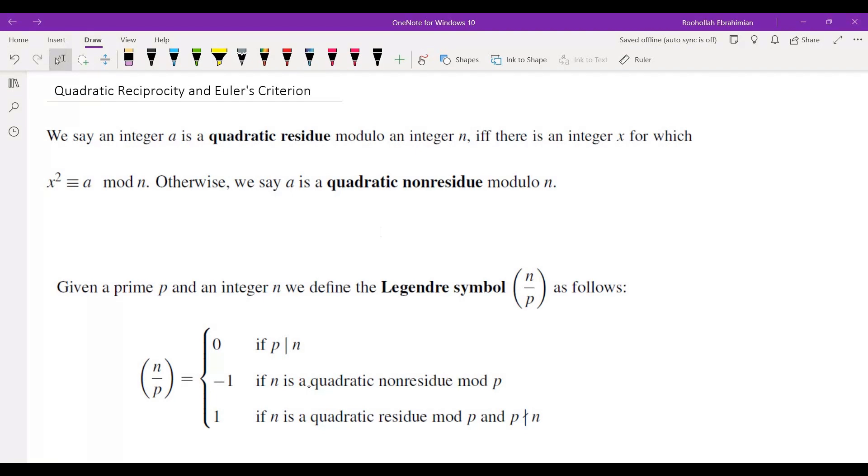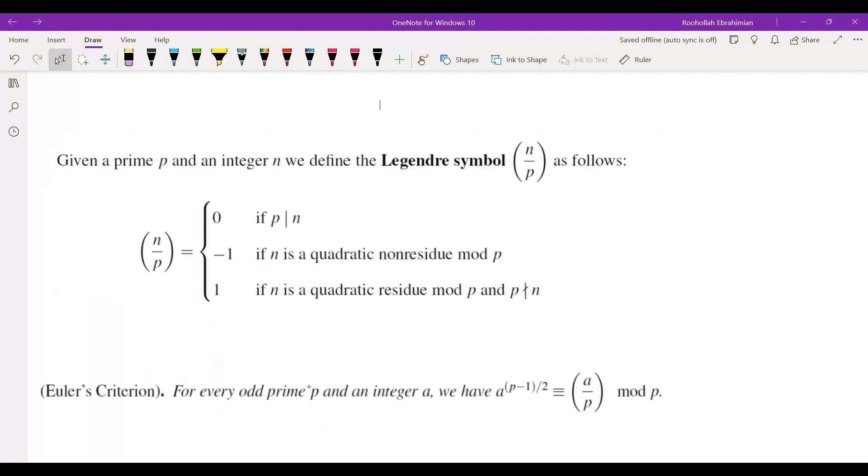Otherwise, we say A is a quadratic non-residue. There is a symbol that we use in order to distinguish quadratic residues and quadratic non-residues.